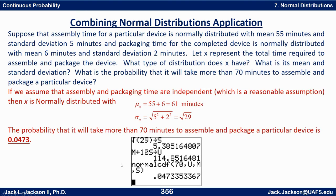Assuming assembly and packaging times are independent — a pretty reasonable assumption since they shouldn't really affect each other — x is normally distributed. The mean is the sum of the means: 55 plus 6 is 61 minutes. The variance is the sum of the variances: 5 squared plus 2 squared equals 25 plus 4, which is 29. So the standard deviation is the square root of 29.